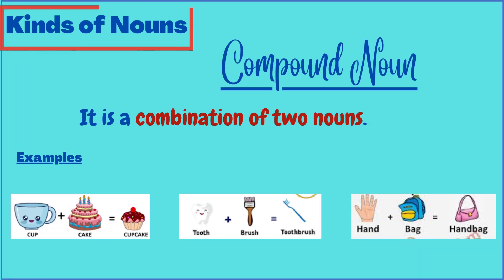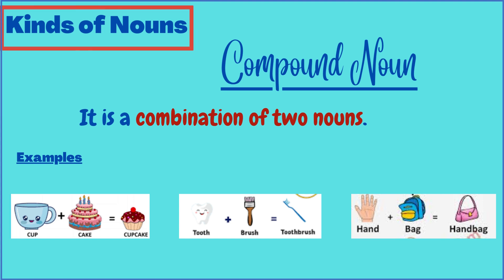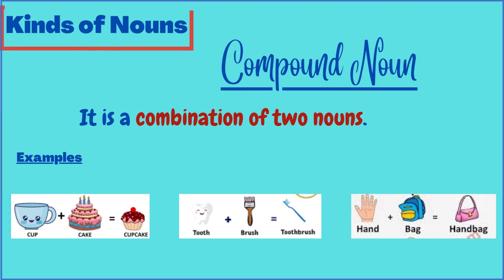A compound noun is a combination of two nouns that makes a new noun. For example, 'cup' and 'cake' combine together to make the new noun 'cupcake.' Similarly, 'tooth' and 'brush' combine to make 'toothbrush.' In the same way, 'hand' plus 'bag' makes the new noun 'handbag.'